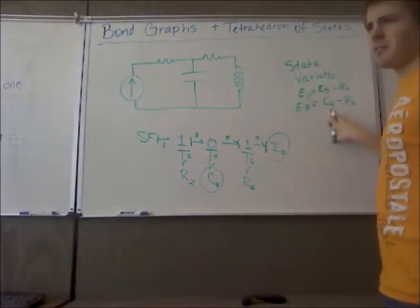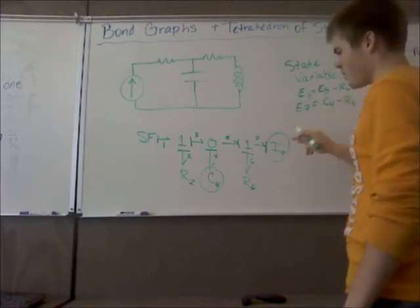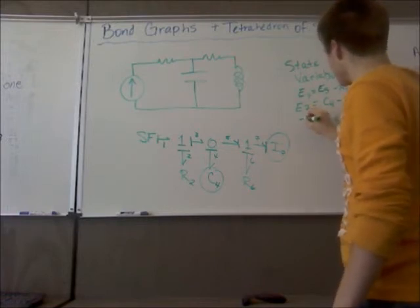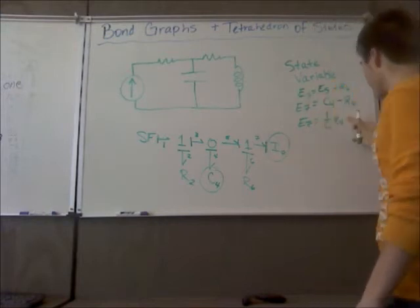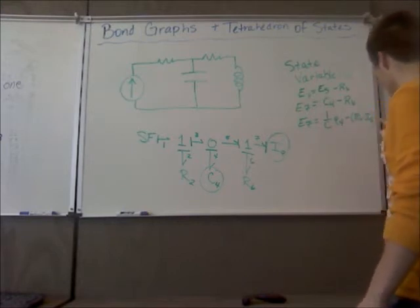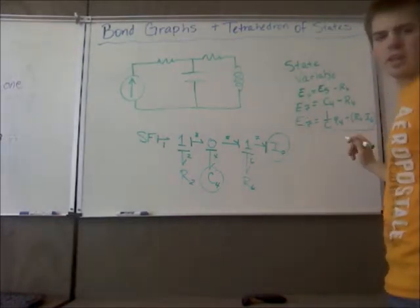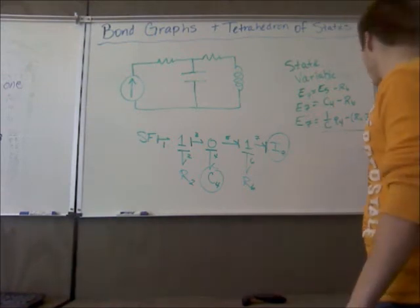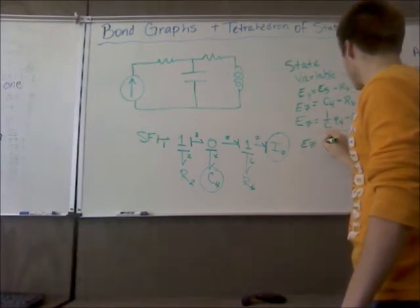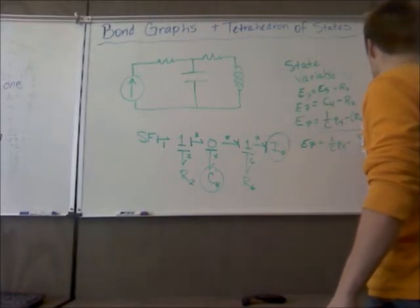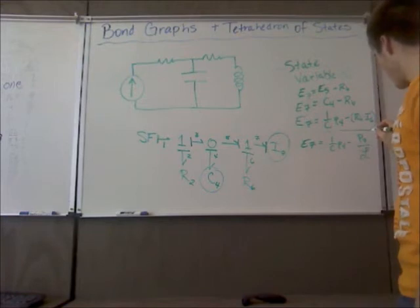So looking at the C4 we know that C4 equals 1 over C Q4. So now we've got 1 over C Q4 minus and this should actually be R6 times I6. And the last thing we need to do is change this R6 times I6 into a state variable and that will end up being 1 over C Q4 minus P7 over L. And that is our first equation.